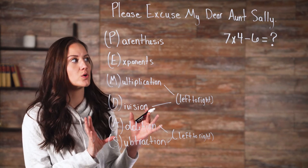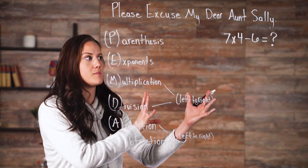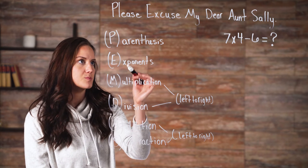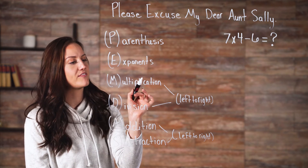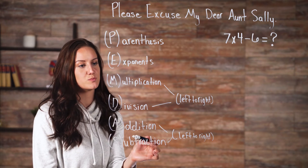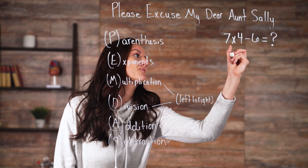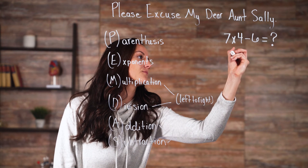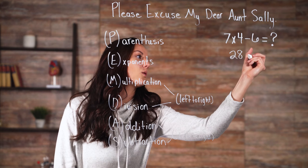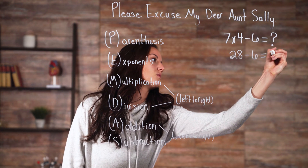Now that we know the order of operations, let's apply it to our problem and solve. Let's go down our list — we don't have parentheses, and we don't have exponents, but we do have multiplication. So we do that before we do any addition and subtraction. Let's go ahead and multiply 7 times 4, which gives us 28. And now we're subtracting 6, which gives us 22.